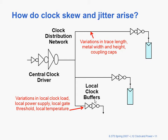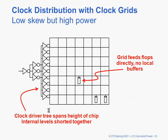Jitter is a little more difficult to understand, or why it might come about. It's variation in local clock load, perhaps. The local power supply could vary across the chip, the gate threshold could vary — primarily as a function of temperature — and temperature would be a function of how much activity is going on around that particular register where the chip would heat up.